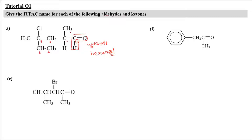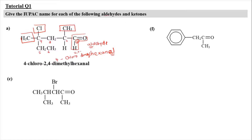We have 3 substituents: CH3, Cl, and CH3. Following alphabetical order, chloro comes first, and since we have 2 methyl groups, it's dimethyl. Chloro is attached at carbon 4, and dimethyl is attached at carbons 2 and 4. So the full IUPAC name is 4-chloro-2,4-dimethylhexanal.